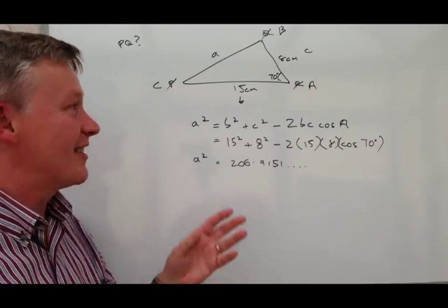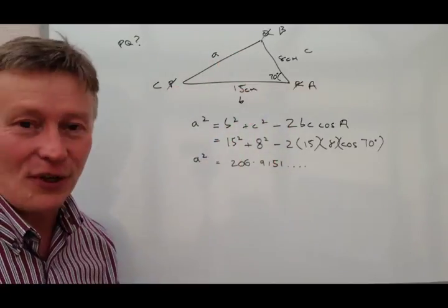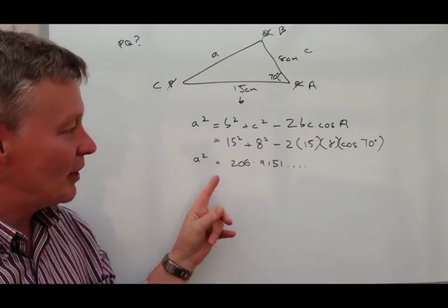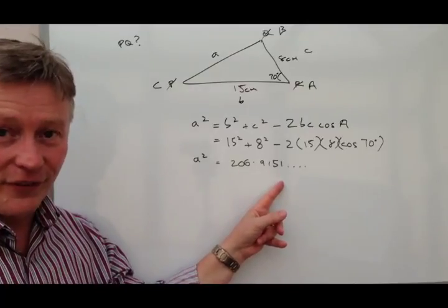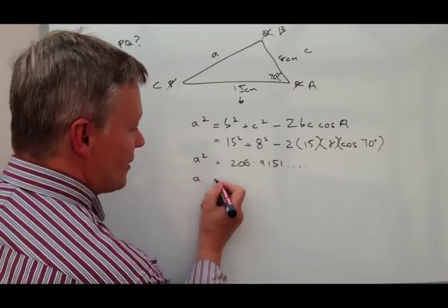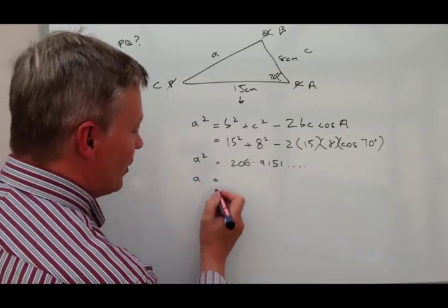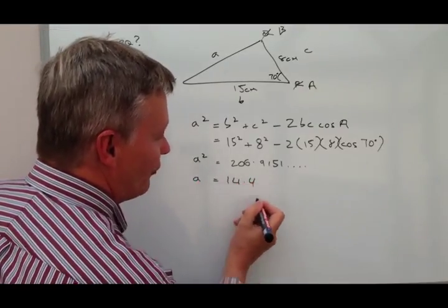It wouldn't quite be right on the drawing or on the triangle itself. So you've got to remember that you've got to do the square root of this. The square root of this means that you get the value of A, which is 14.4.